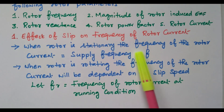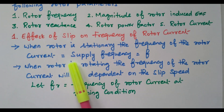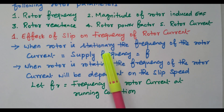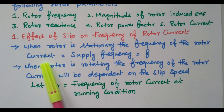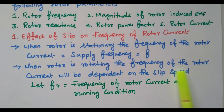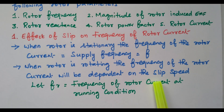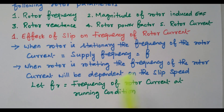Effect of slip on frequency of rotor current. When the rotor is stationary, the frequency of the rotor current equals the supply frequency — both are equal. When the rotor is rotating, the frequency of the rotor current depends upon the slip speed. F is the supply frequency; FR is the frequency of rotor current under running condition.